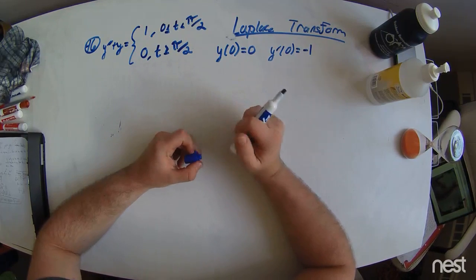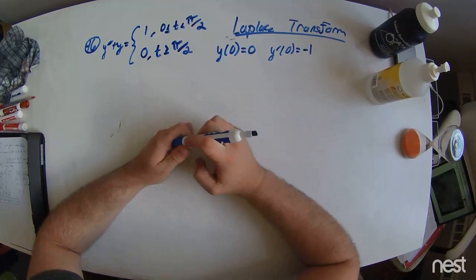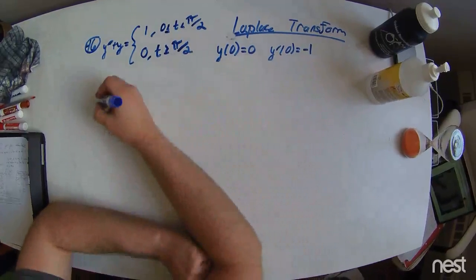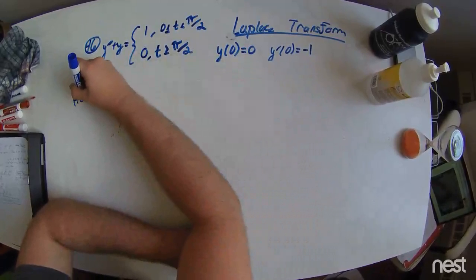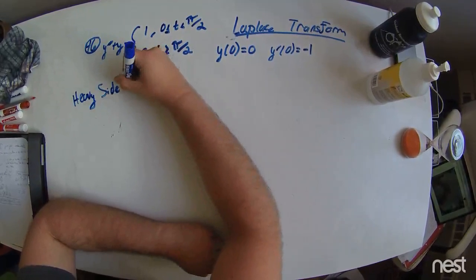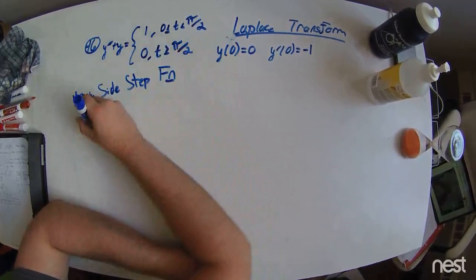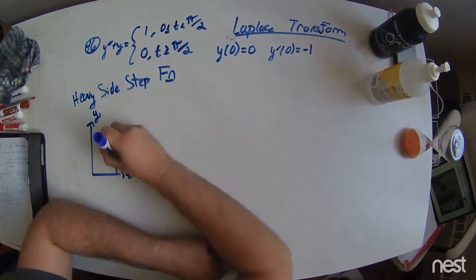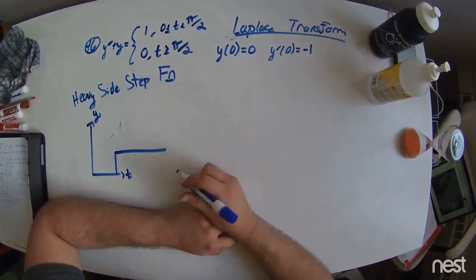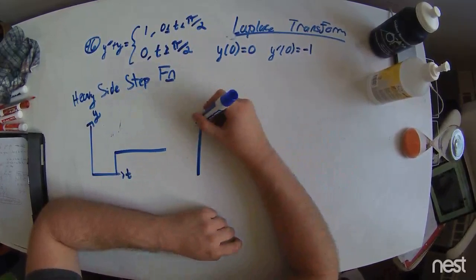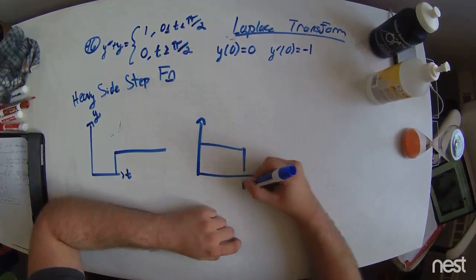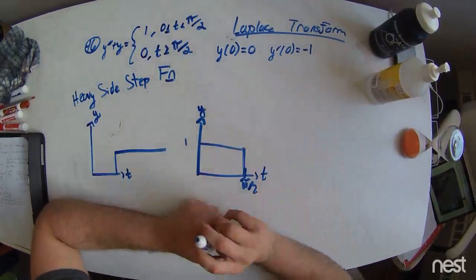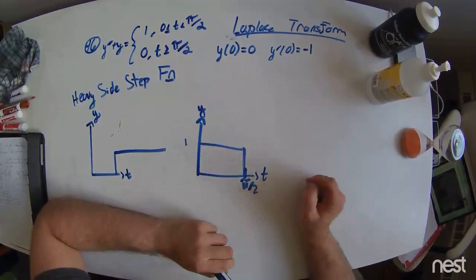Now, this already has to be written in the form that we can take the Laplace transform of and therefore understand. So, the function, this y double prime plus y equals this type of function, a heavyside step function. Which looks like this. Just a square wave. An infinite square wave. That's all the Laplace looks like. However, in this problem, it will swing along these lines. 1 from 0 to pi over 2 and 0 for all the rest of time.